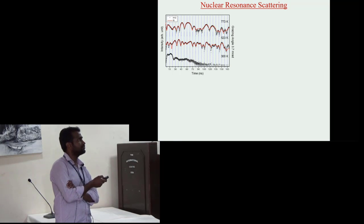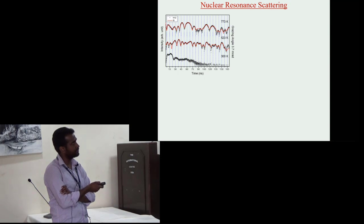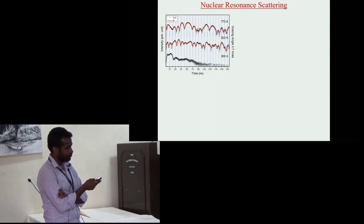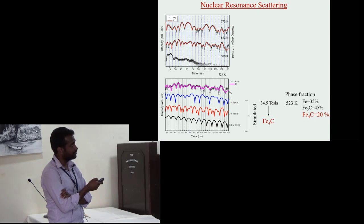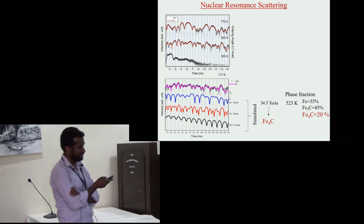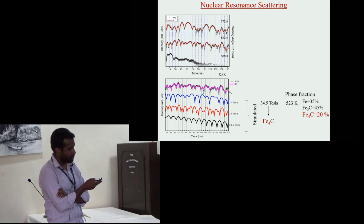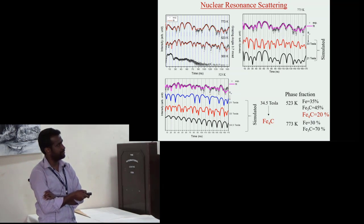This is the spectra for our sample. At room temperature the beating decays instantly that shows the sample has lack of long range ordering. At this temperature the beat period changes from 5 nanometer to 15 nanometer, and at this temperature the beat period changes from 10 to 15 nanometer. That shows at this temperature there is a possibility of presence of some higher magnetic moment phase. To investigate this we have fitted this spectra using three hyperfine fields of Fe3C, Fe, and Fe4C. That shows existence of Fe4C at this temperature and the volume fraction obtained is around 20 percent.